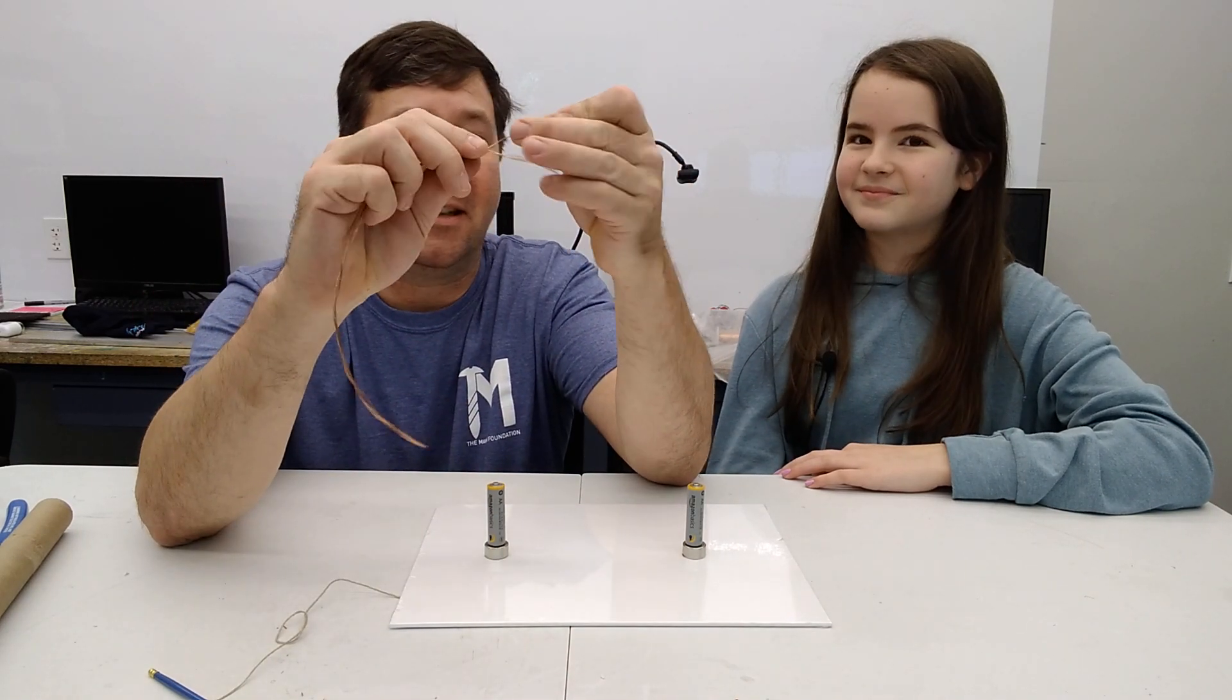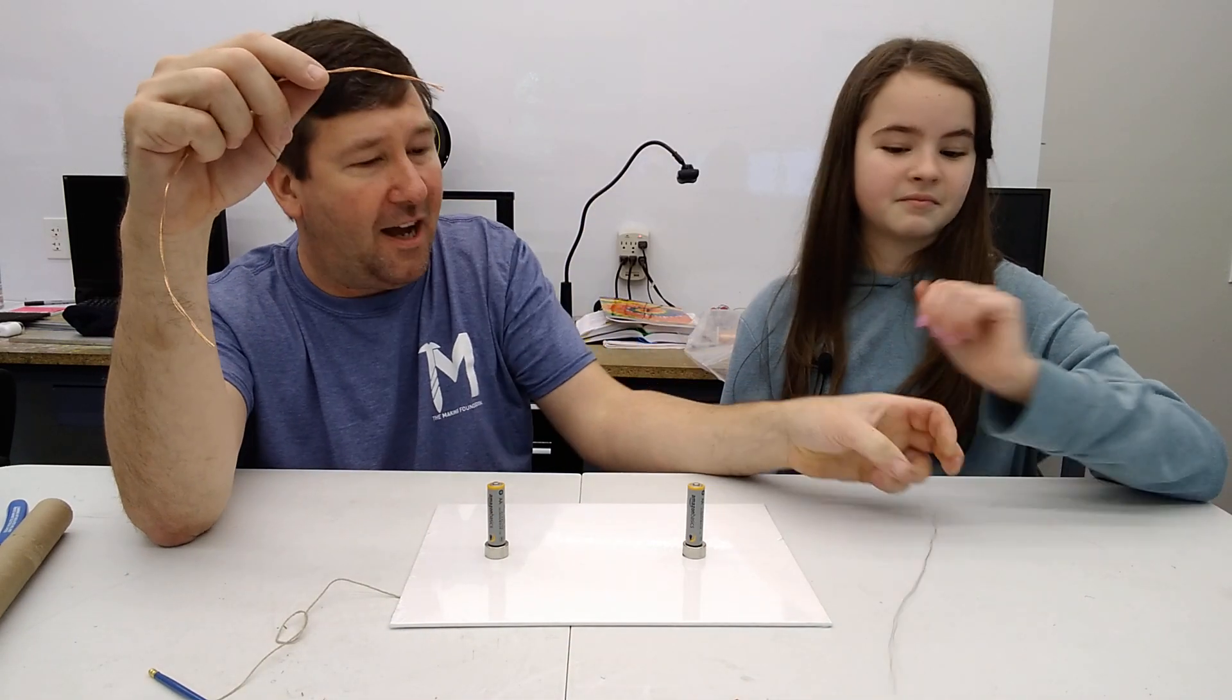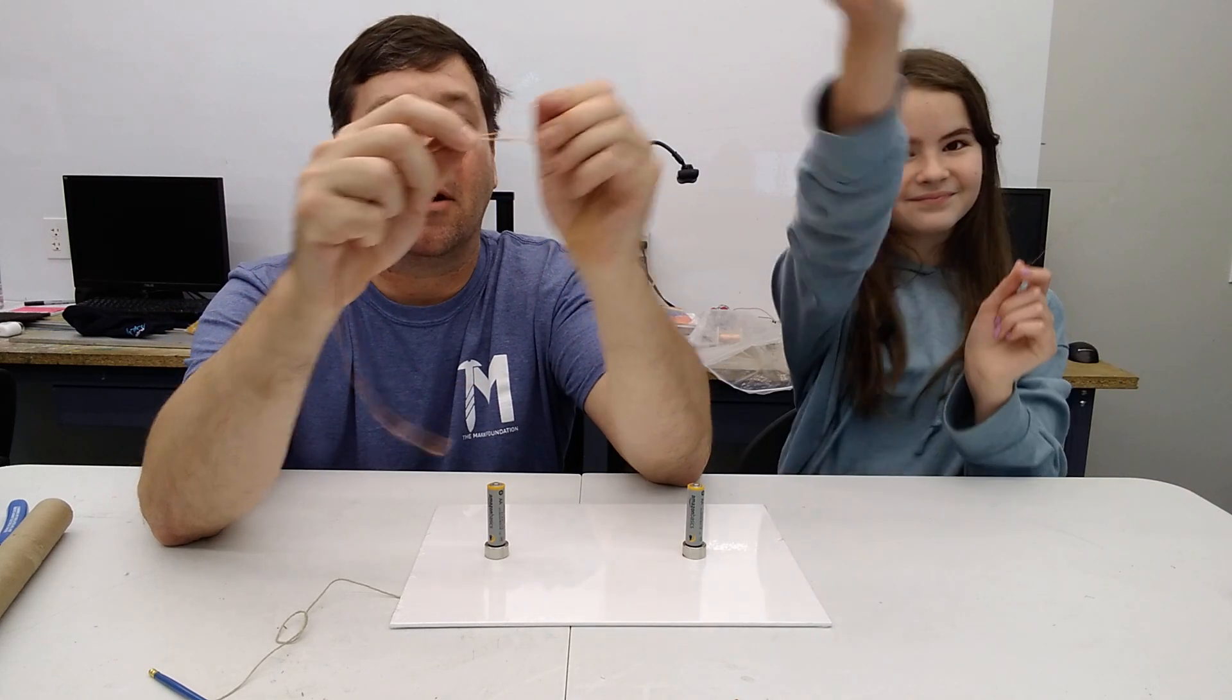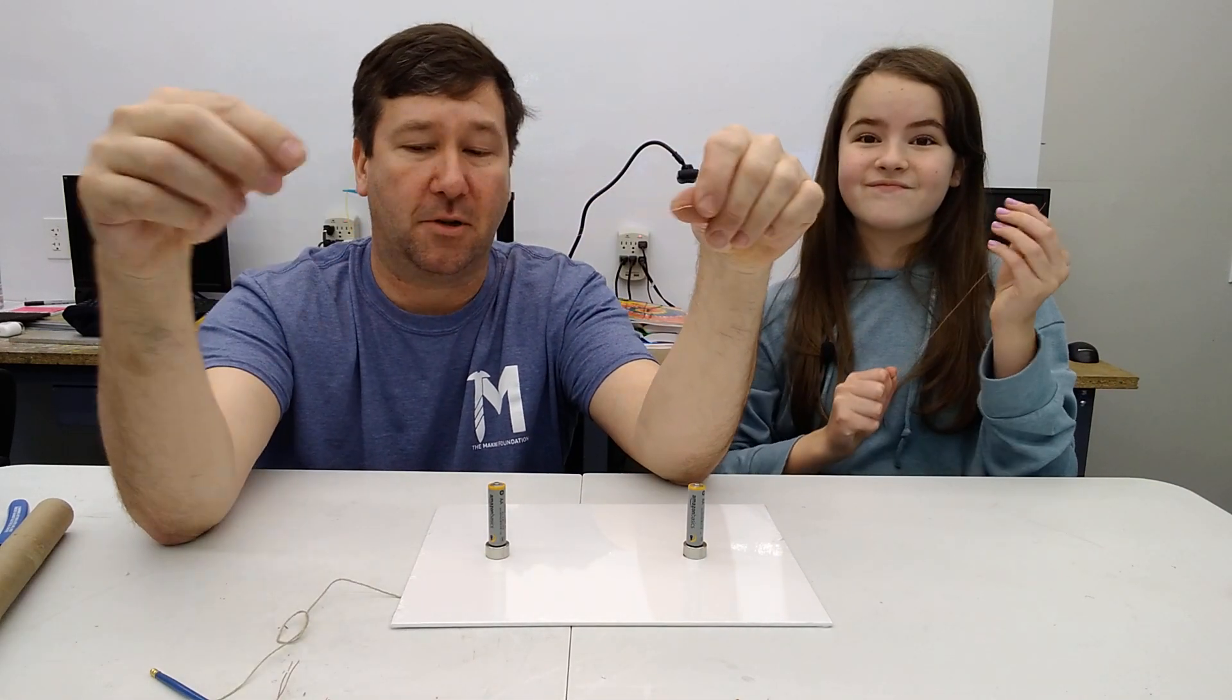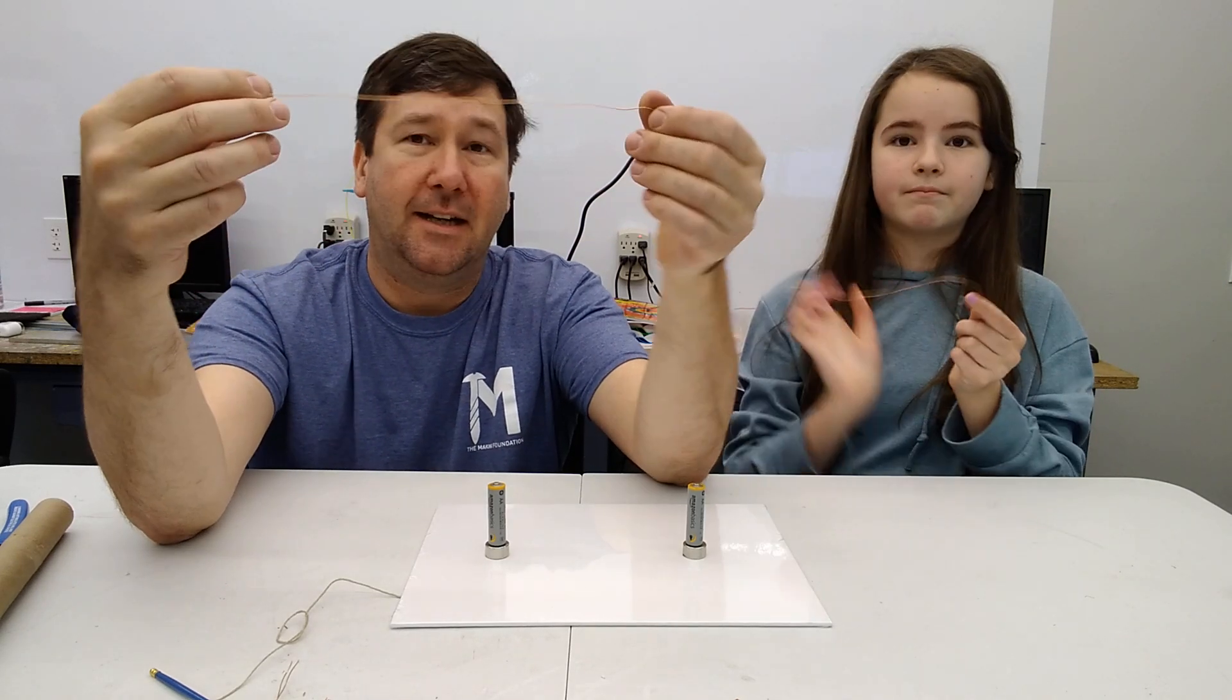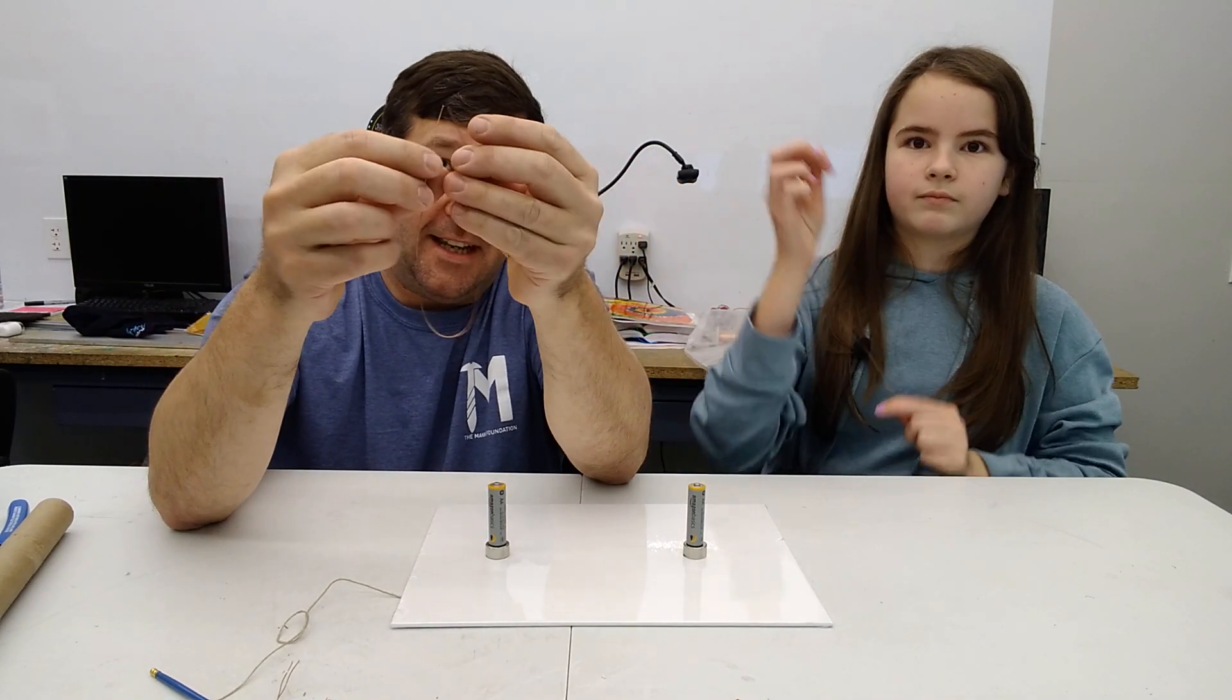And then we're going to take some copper wire—wait, so this can be wire out of an old appliance or some art wire. Mainly it needs to be uncoated, like you would get out of a typical piece of wire. And then we're going to fold it in half.